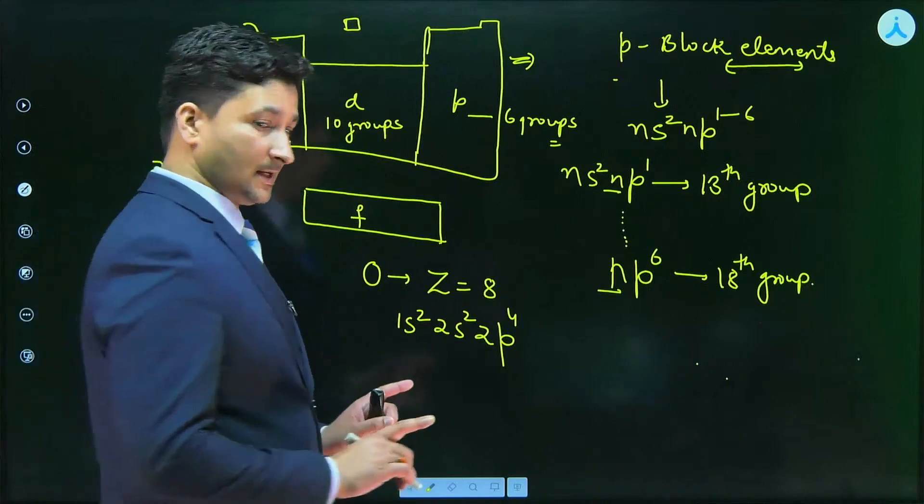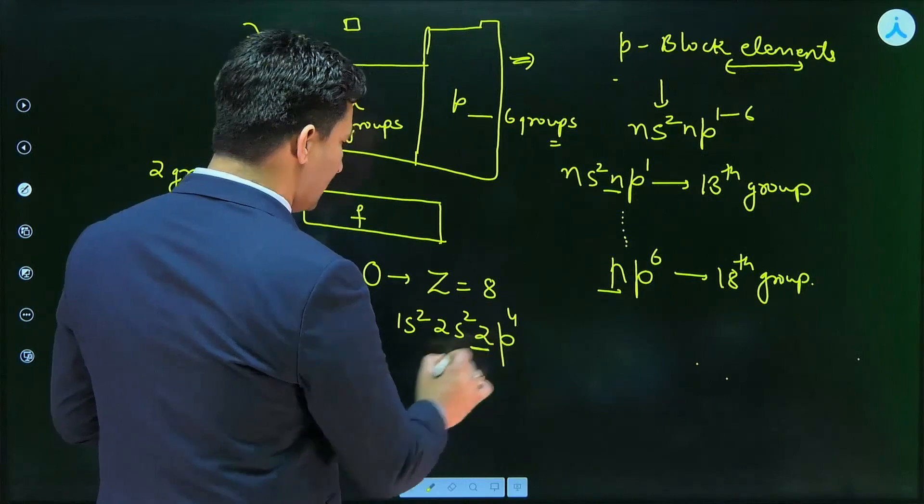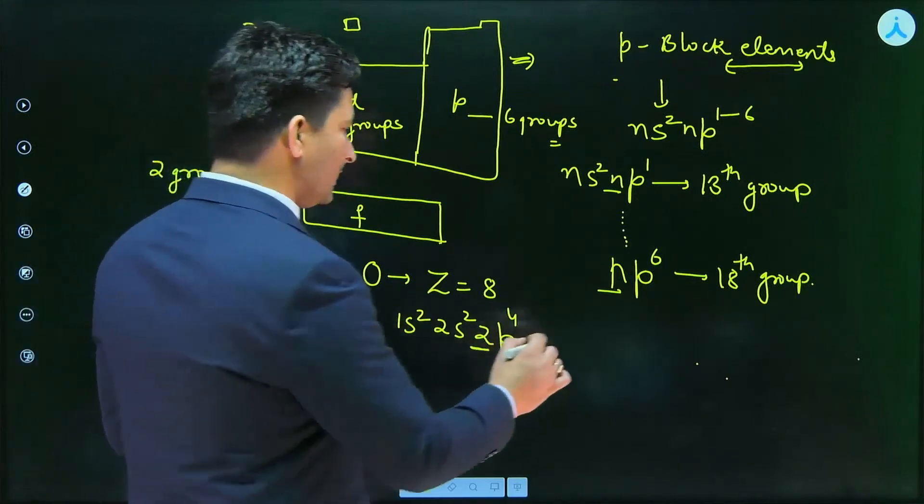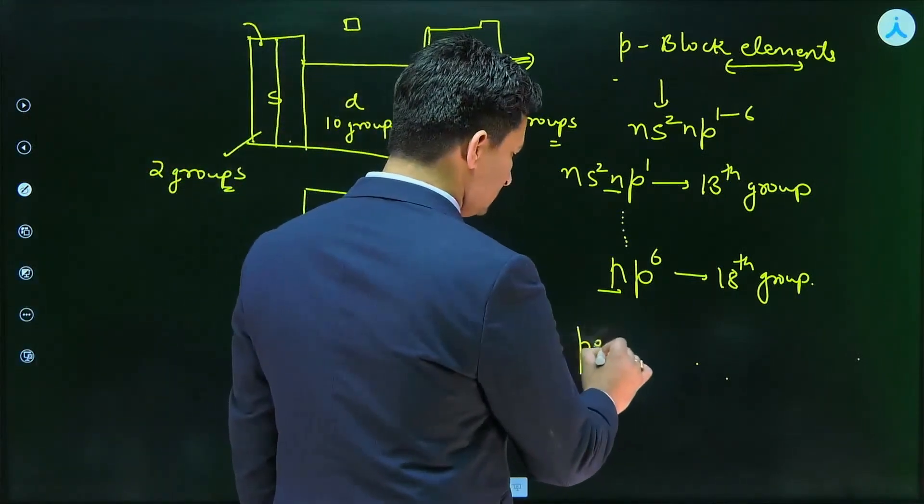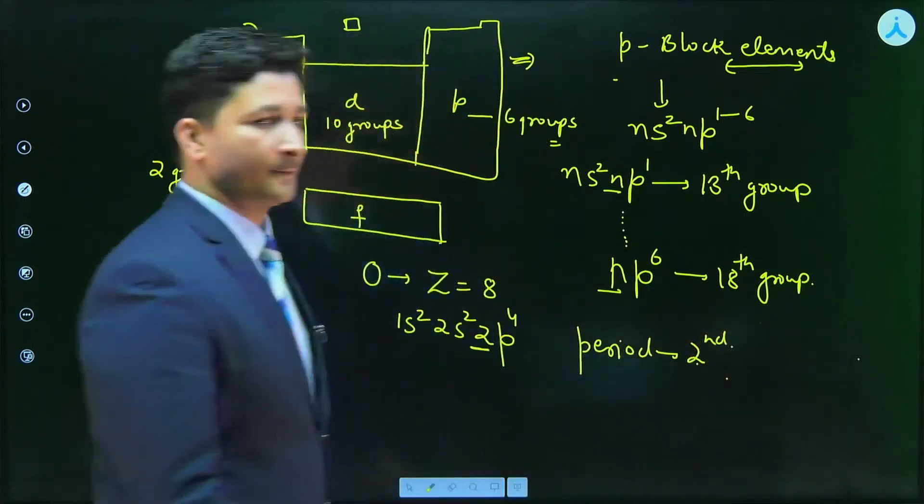Now, let us have a look. Yes, very good, you are all correct. As you can see, the maximum value of n is 2, so therefore it belongs to period 2nd.